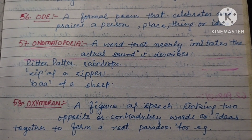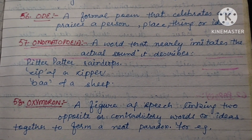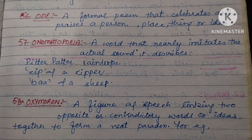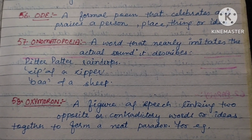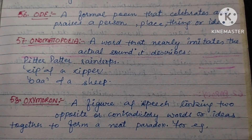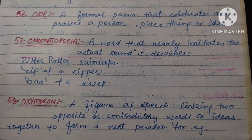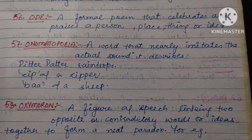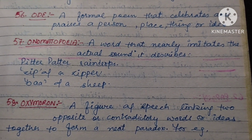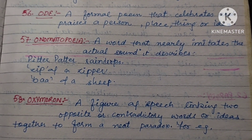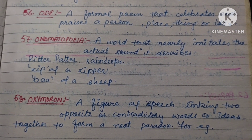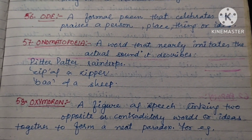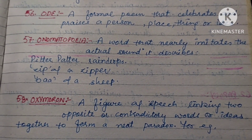Next is Ode. Ode is a formal poem that celebrates and praises a person, place, thing, or idea. Like John Keats' Ode to a Grecian Urn, etc. All of those things are praised. We call it an Ode.